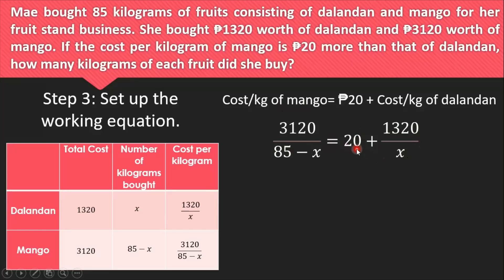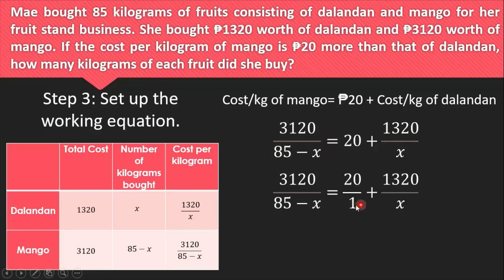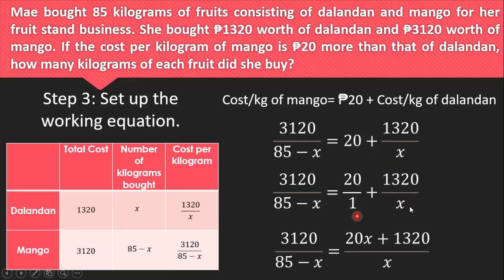Now we have an equation with different denominators, each completely factored. Our LCD becomes x times the quantity (85 minus x). For step 5, we multiply both sides of the equation by this LCD to clear the denominators. The resulting equation is: 3,120x equals the quantity (20x + 1,320) times the quantity (85 minus x). You can also use the cross multiplication method here.